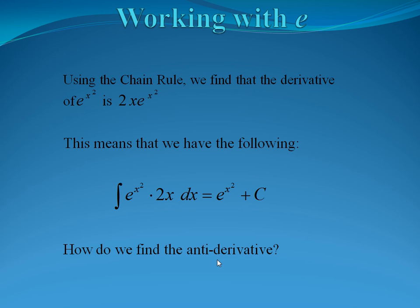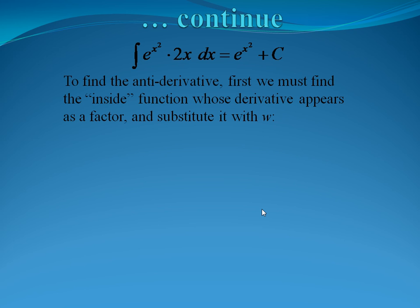There's a similar situation when working with e. Using the chain rule, we find derivatives of e by looking at the original function and the derivative of the power of e. We know from the chain rule that if you start with e to the x squared, the derivative is 2x times e to the x squared — you get the same thing back with a multiplier in front, which is the derivative of the power. From what we know about antiderivatives, if we take the antiderivative of 2x e to the x squared, we should get back e to the x squared. So how do we find this antiderivative using substitution?